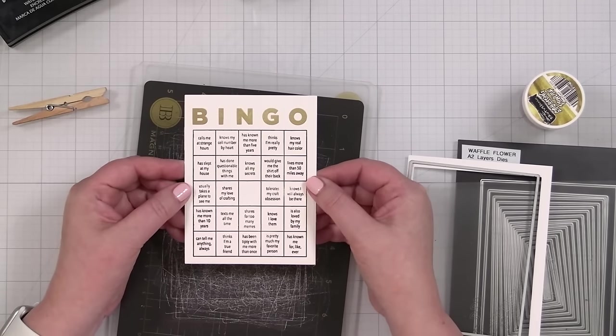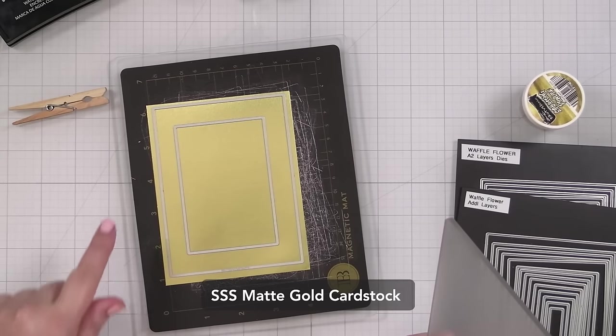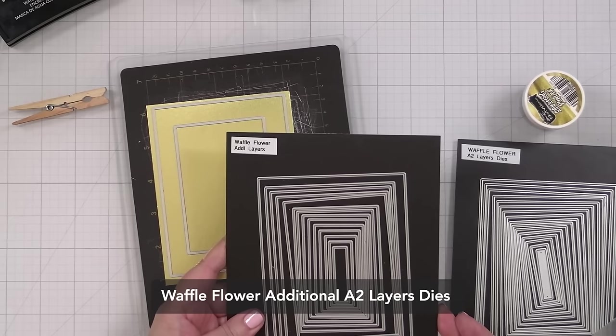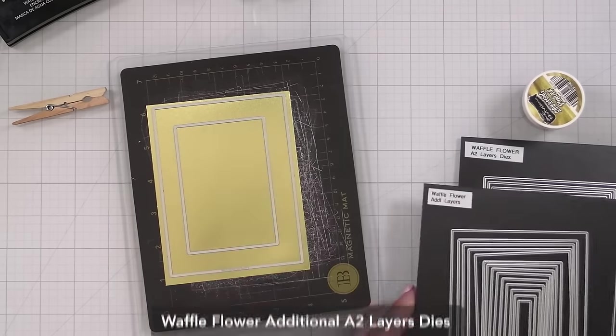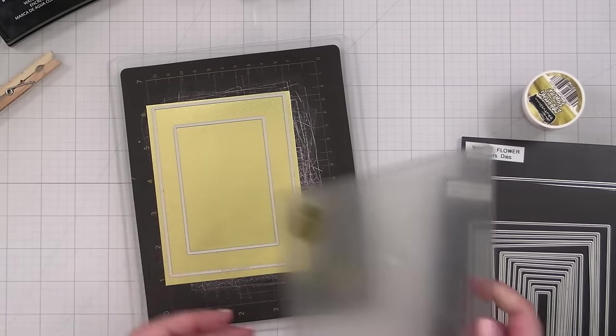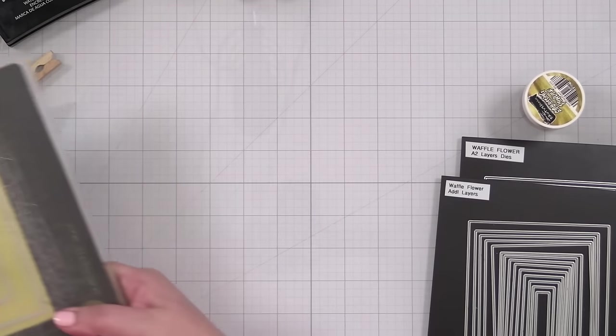And now I have my bingo card. Now to do the other things to finish it out. I'm going to mat my panel in matte gold cardstock. So I took the additional waffle flower layers, dies. These are just like, I think an eighth of an inch on all sides bigger. You can also just mat it and trim it by, you know, with the trimmer, but I'm going to cut this out.